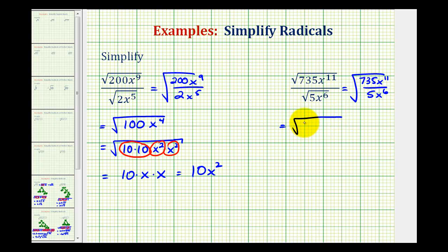So we have the square root of 147. And then x to the eleventh divided by x to the sixth. We subtract our exponents. This would be x to the fifth.